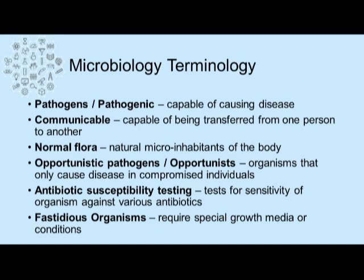Opportunistic pathogens, or an opportunist, can be normal flora, but is an organism that only causes disease in a compromised individual. This could be somebody with an elevated age, or perhaps somebody taking an immune-suppressing drug like chemotherapy. Antibiotic susceptibility testing tests for sensitivity of an organism against various antibiotics, and an organism that is difficult to grow and requires special growth media is fastidious.